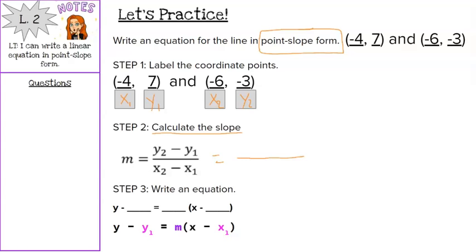So y2 minus y1 on the top, y2 is negative 3, minus y1, which is 7. Then doing the same thing on the bottom with our x's, we have x2 is negative 6, minus x1, which is negative 4. So sometimes you will have this double negative here going on, minusing a negative, and that's okay.